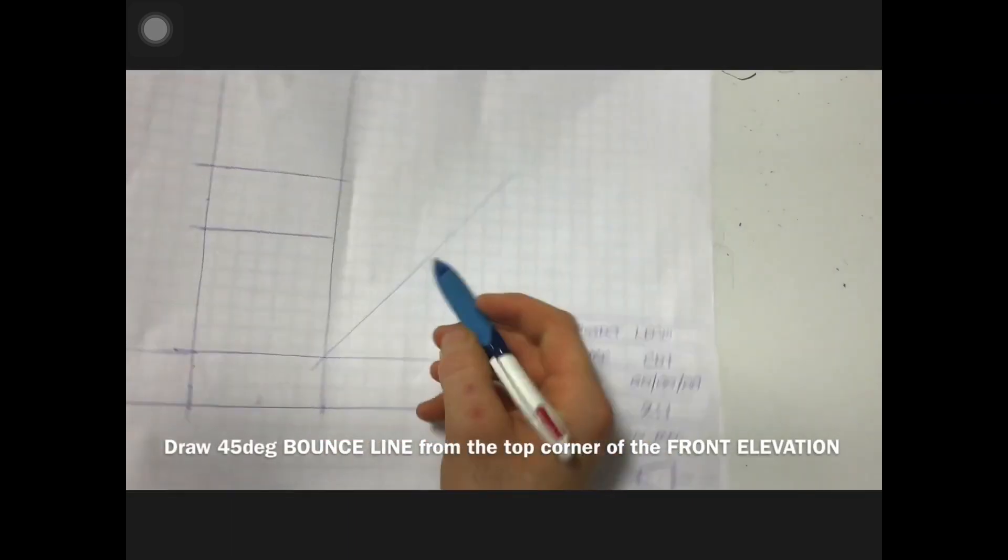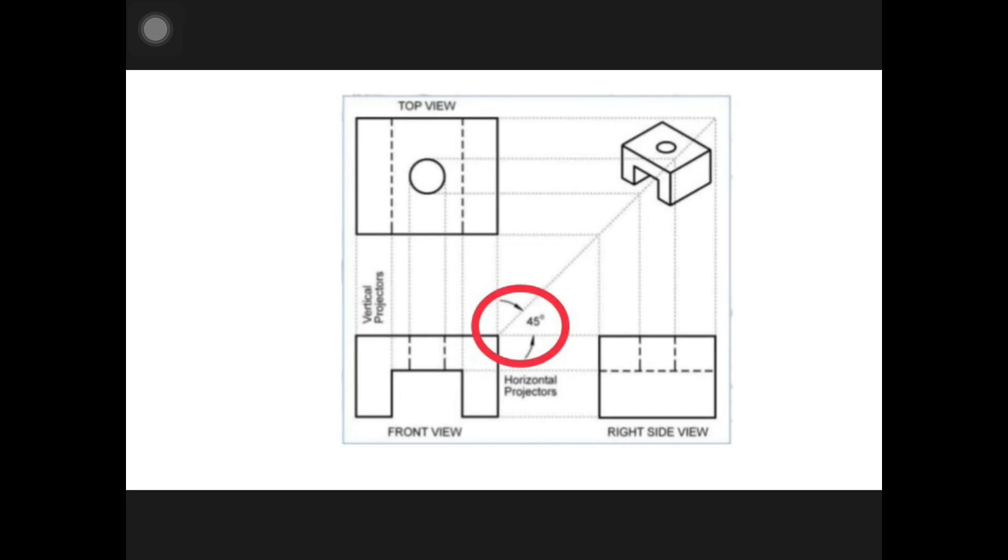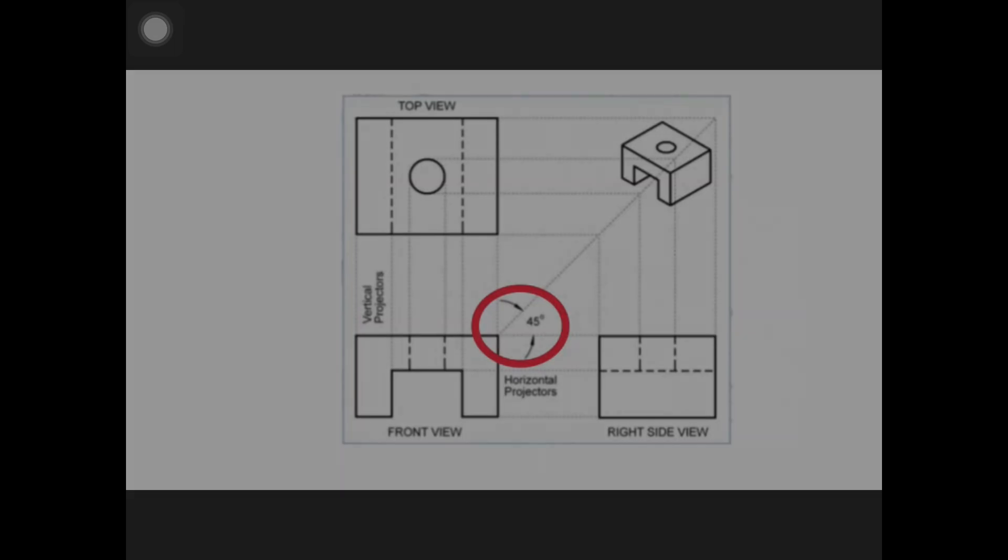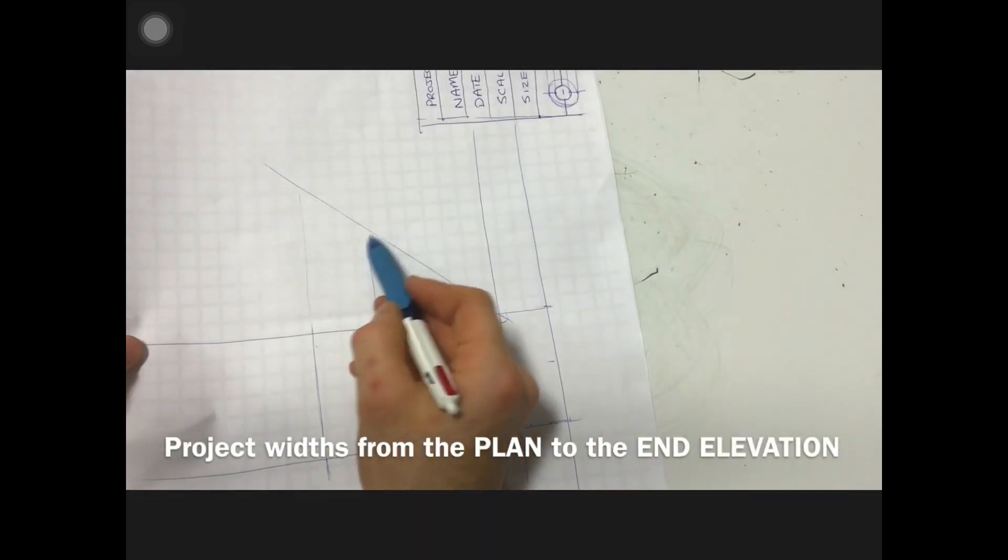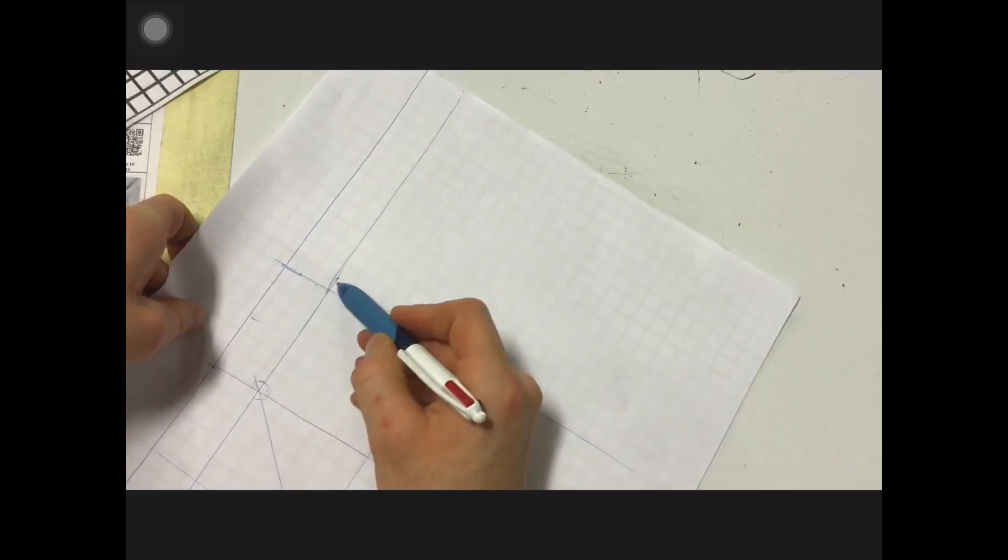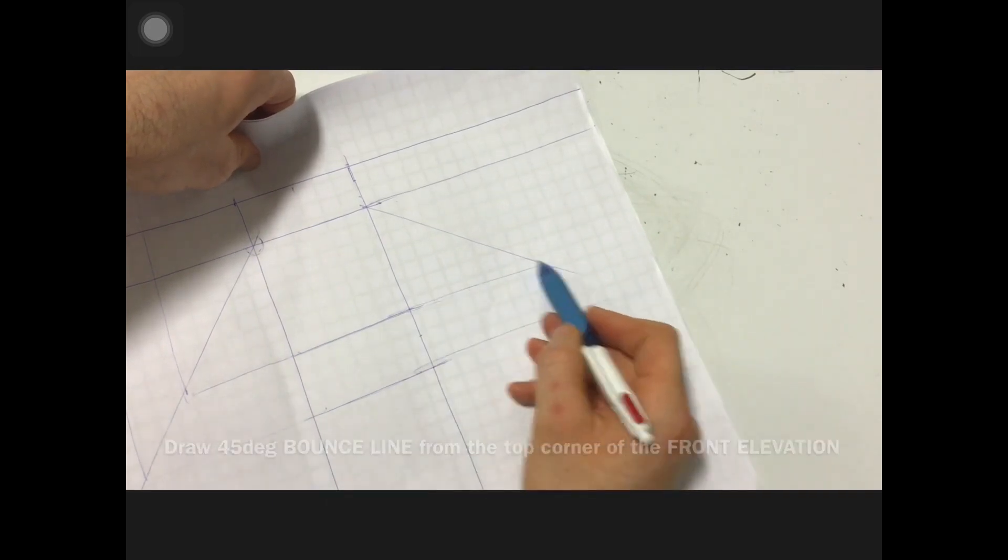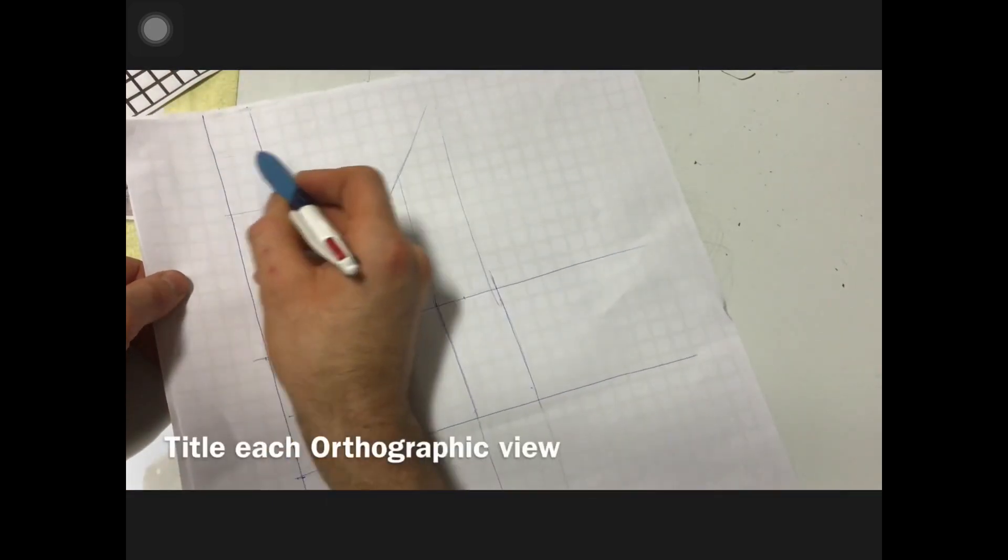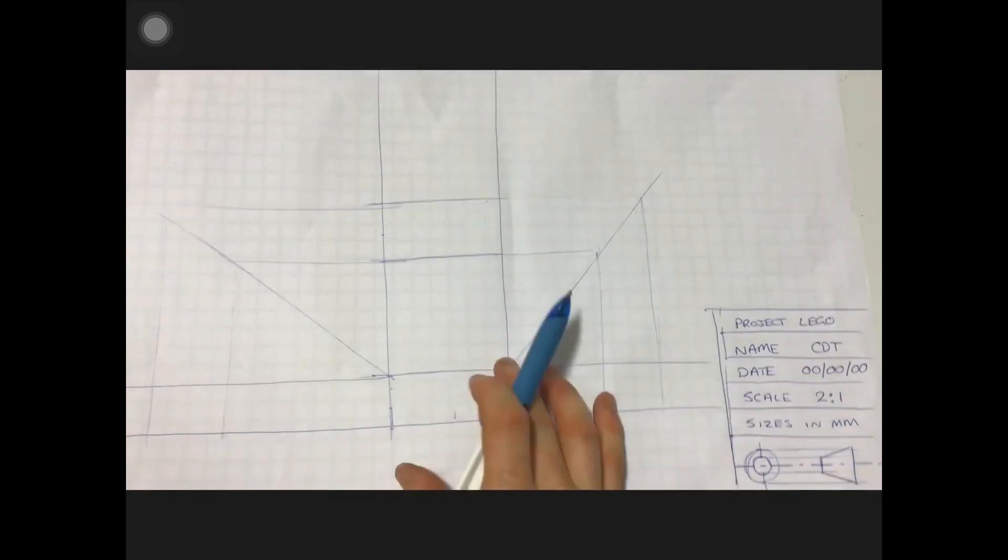Starting to use what's called a bounce line - it's a 45 degree line that you project from the corner of your object. Use that to draw in end elevations really quickly and neatly and clearly. So I've got my elevation drawn in there, 45 degree bounce line from here, and elevation drawn into that one and this one, and you notice I've now got all my views laid out.